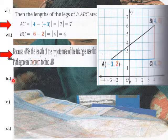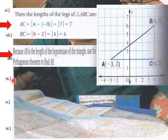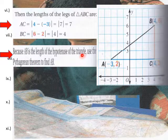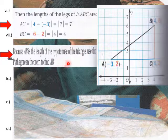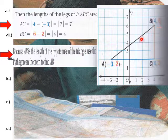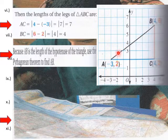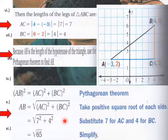Because AB is the length of the hypotenuse of the triangle, use the Pythagorean theorem to find AB. The lengths of the legs are AC equals 7 and BC equals 4. We plug that into our formula and get the square root of 65 as the length of AB.